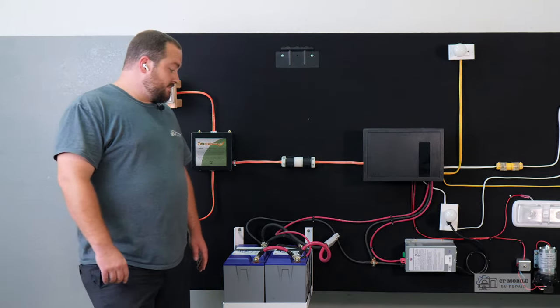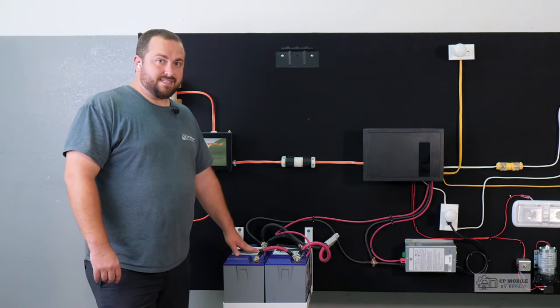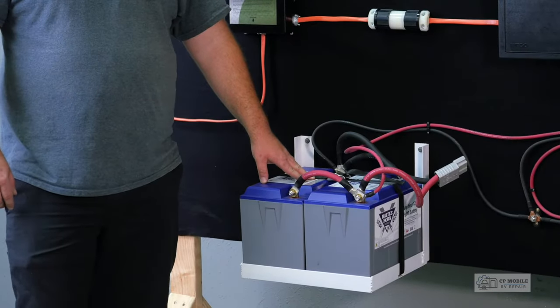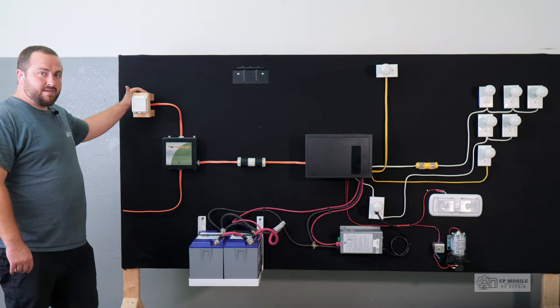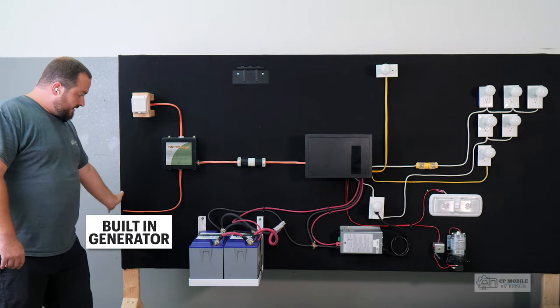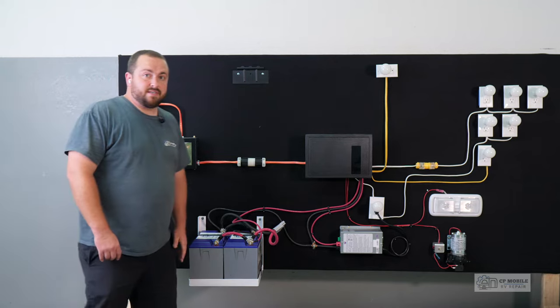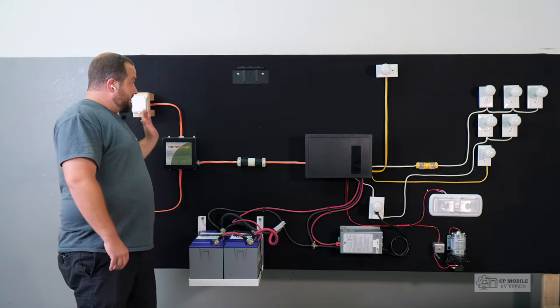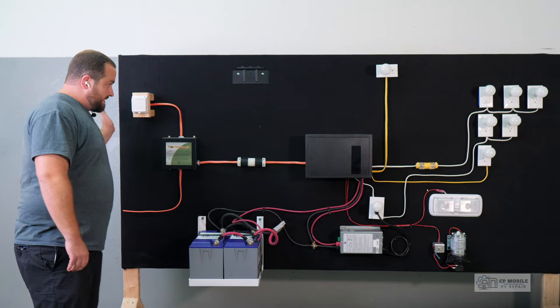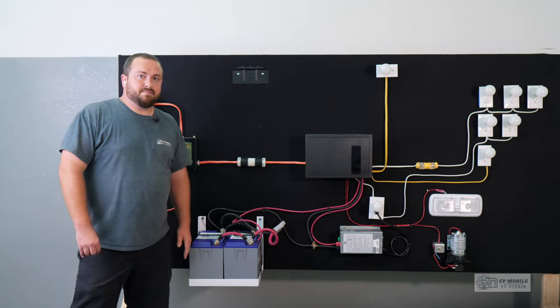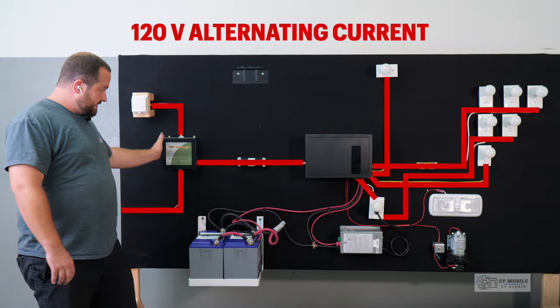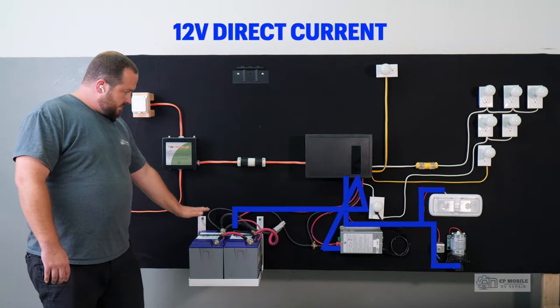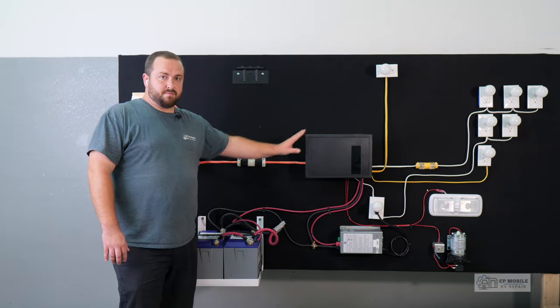RVs have dual voltage power systems that use both 12 volt DC or direct current power which is supplied by the RV batteries and 120 volt AC or alternating current power which is supplied by the power grid or a generator. I have laid everything out here so that power flows from left to right for both systems on this board. The upper section contains the 120 volt power system, the lower section contains the 12 volt DC power system, and in the middle we have the power distribution panel for both systems.